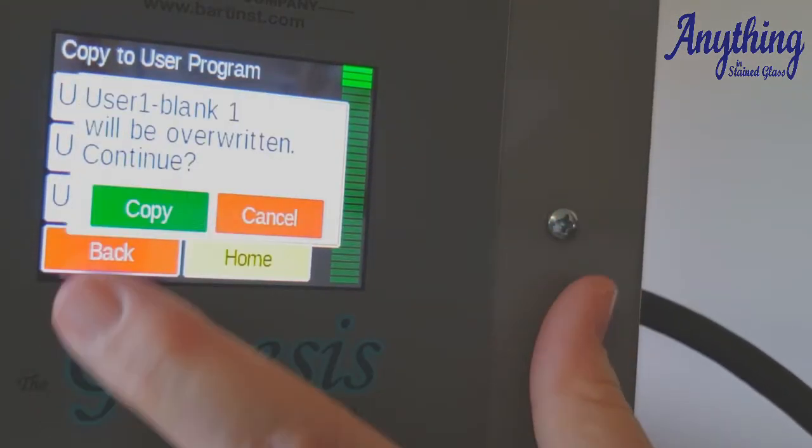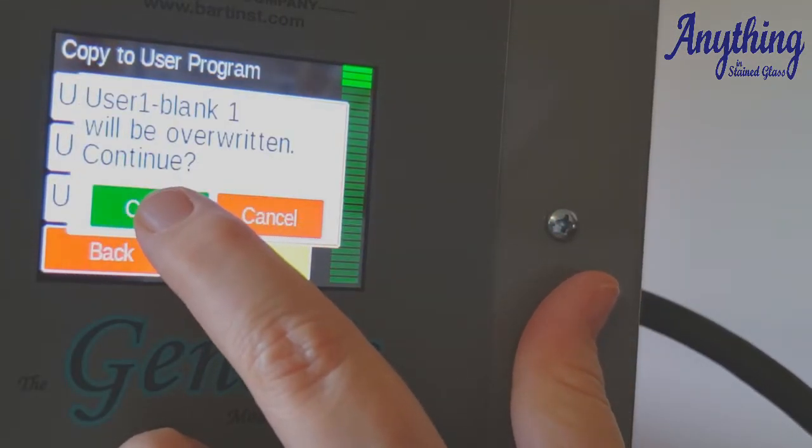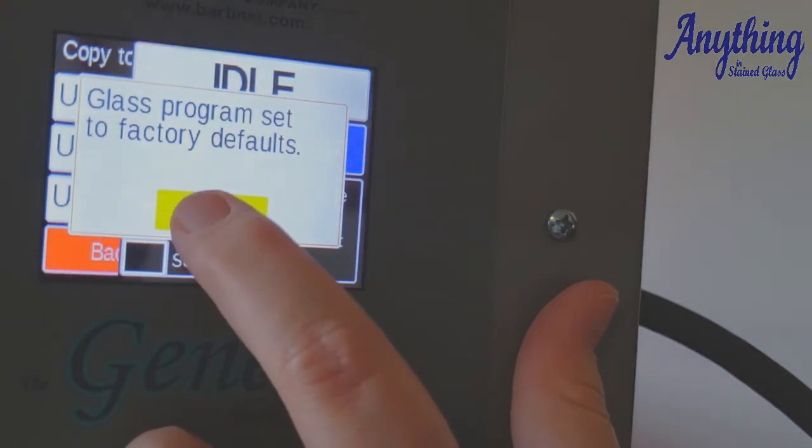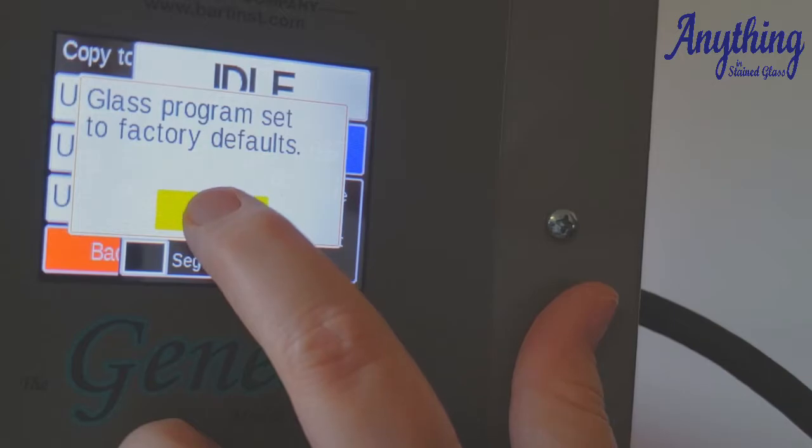We save it, and now everything's on there. We press copy, user 1, and yes, we're going to copy. It always asks you if you want to continue, and now it says it's set to factory defaults.